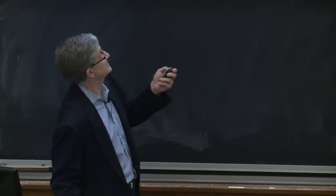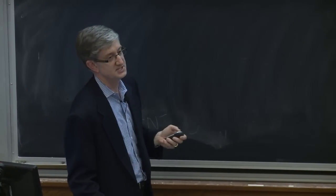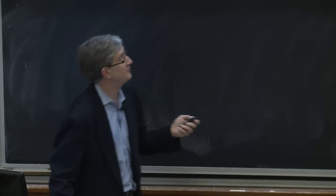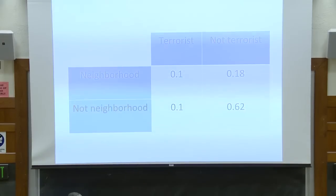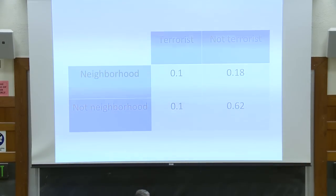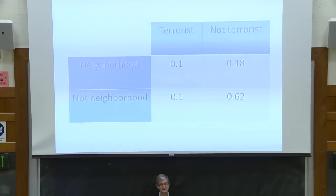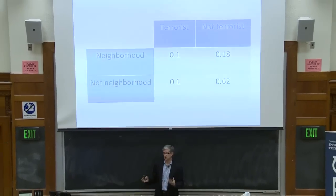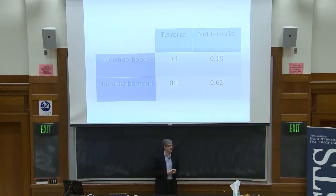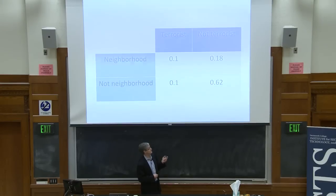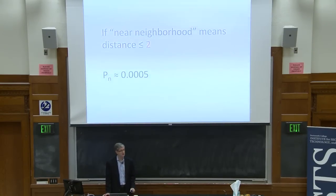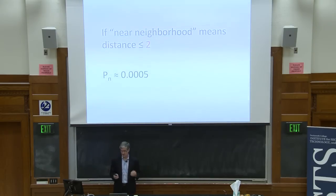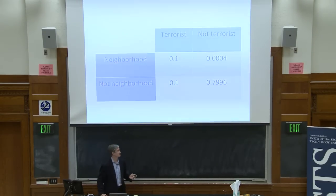Why is the upper-right only 36%? The problem is the large false positive box — Bob is in the neighborhood despite not being a terrorist. To reduce the false positive rate, we can shrink the size of the near neighborhood. If we reduce the definition from distance three or less to distance two or less, we go from a 22% chance that random people are in the near neighborhood to a 0.05% chance — way, way lower.